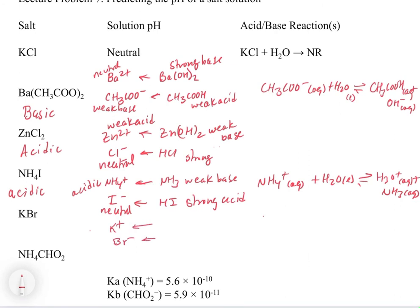For KBr, the conjugates are KOH and HBr. KOH is a strong base and HBr is a strong acid. Since both conjugates are strong, both ions are neutral. The conjugate acid of a strong base is neutral, and the conjugate base of a strong acid is neutral. So KBr is a neutral salt.